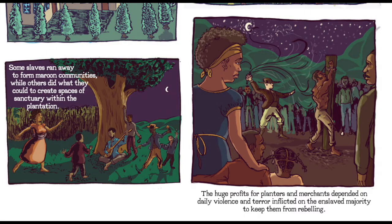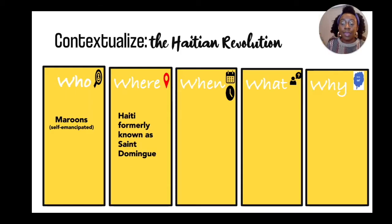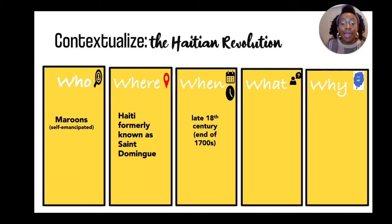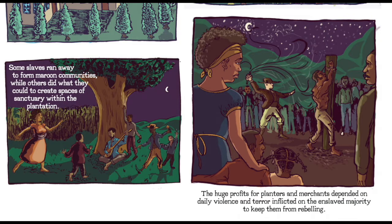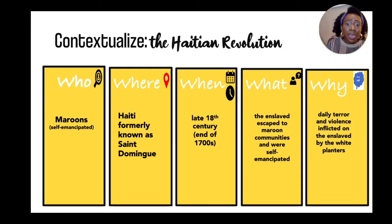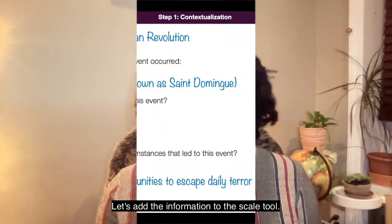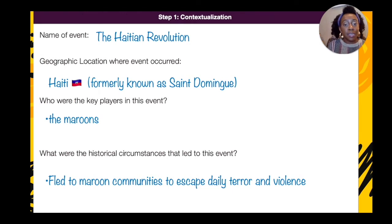First example — Who: the Maroons, they were self-emancipated. Where: Haiti, formerly known as Saint-Domingue. When: late 18th century, end of the 1700s. What: the enslaved escaped to maroon communities and were self-emancipated — they freed themselves. Why: because of the daily terror and violence inflicted on the enslaved by white planters. Let's add this information to the scale tool.